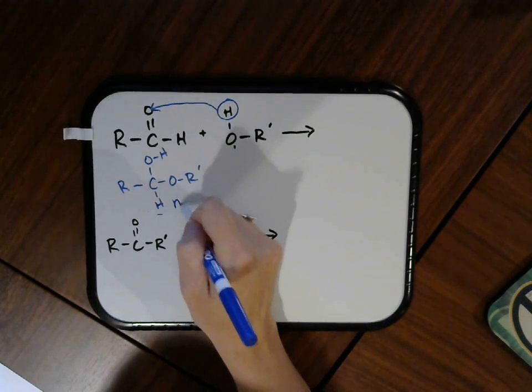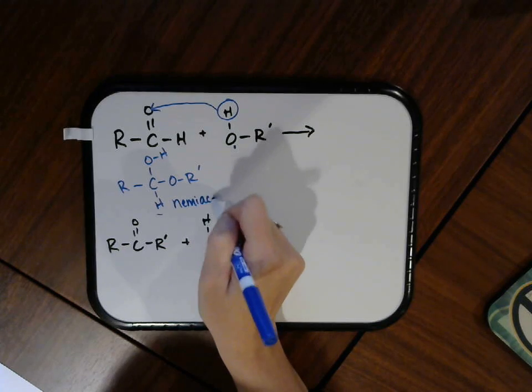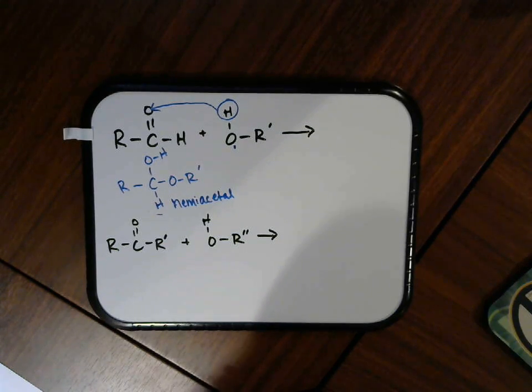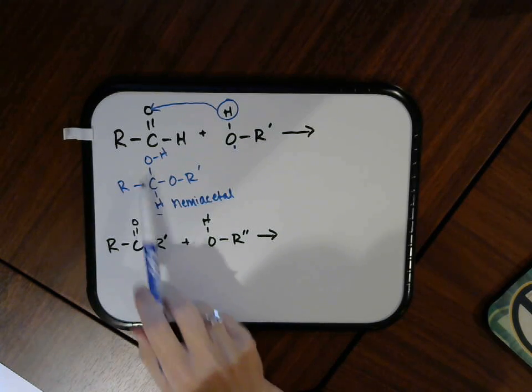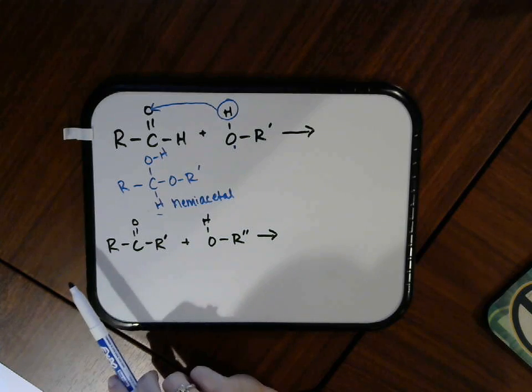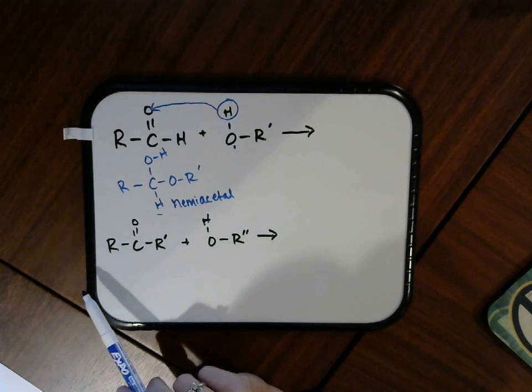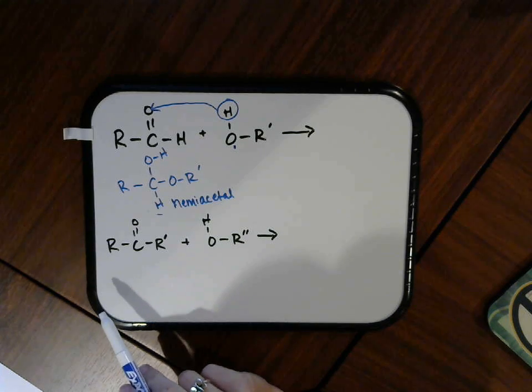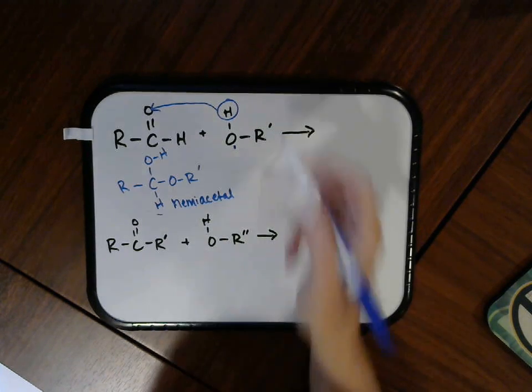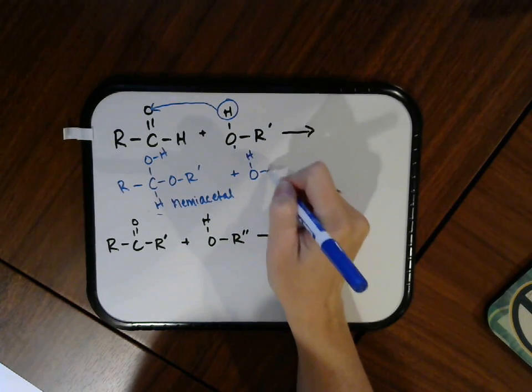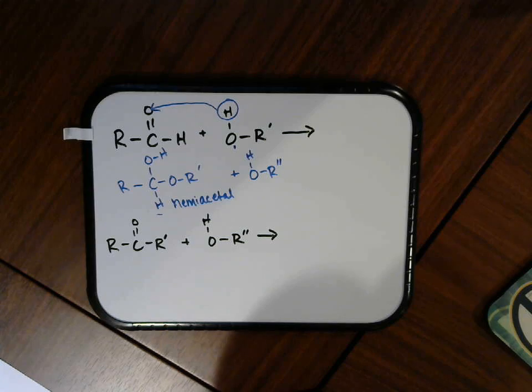This right here is called a hemiacetal, which hemi means half. This is half of an acetal. A hemiacetal has a hydroxide group on the carbon and it has an oxygen with an alkyl group on the carbon right there. Now hemiacetals are not normally stable. But if you have a hemiacetal and you have an alcohol present, which generally you do, I'm going to put two primes on that R just in case it's a different alcohol right there.